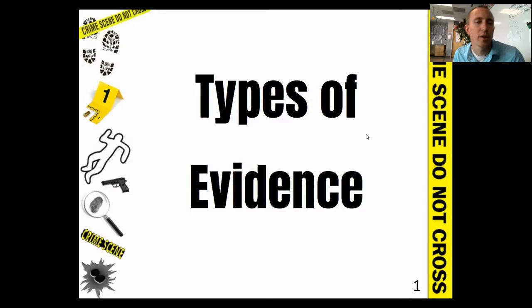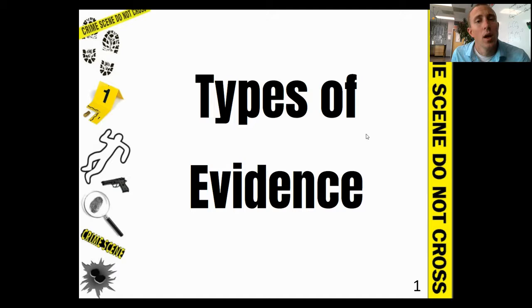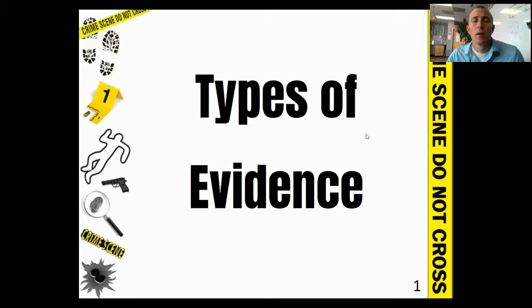Hey guys, Mr. Nichols here to talk about our new concept, which builds off of what we already talked about last week with individual versus class evidence. Those were our two big groups of evidence. Next week we will be doing an in-lab activity on the different types of evidence. Our mock activity for this week is to learn about the case of the OJ Simpson murder trial.